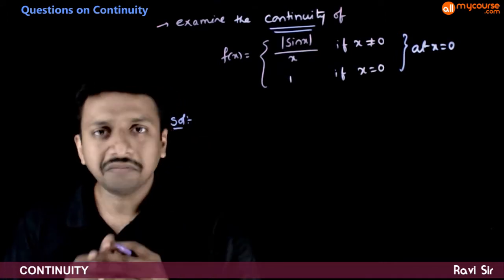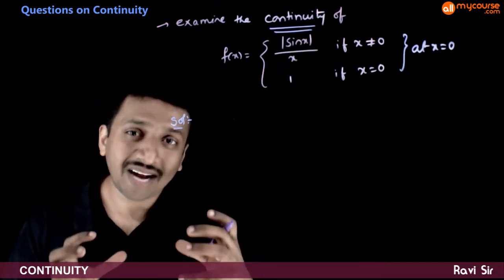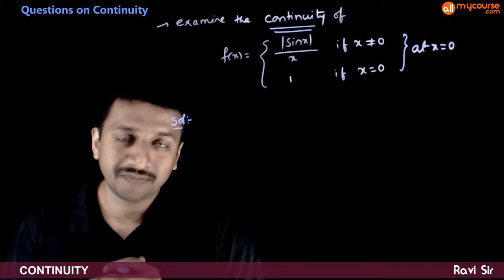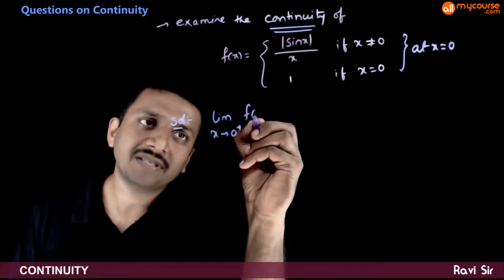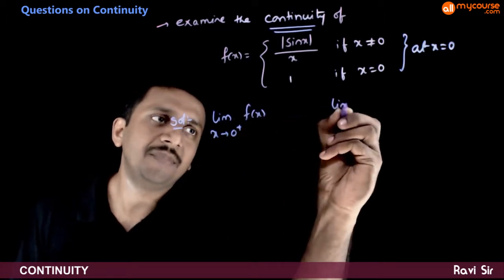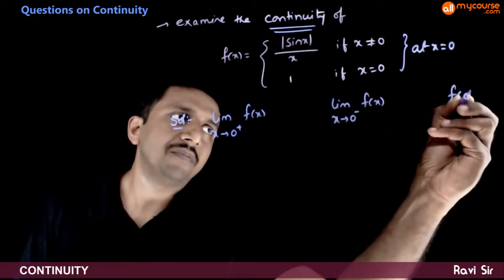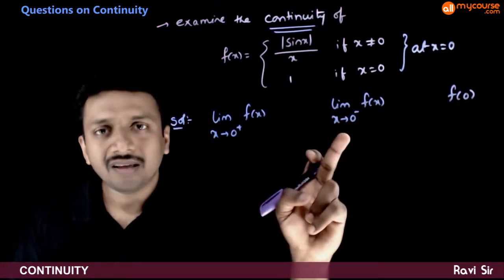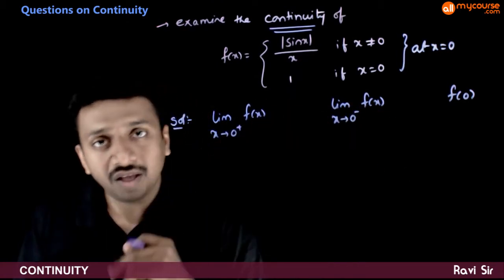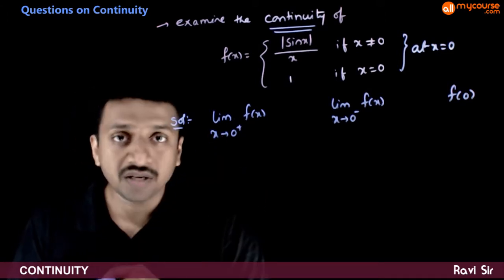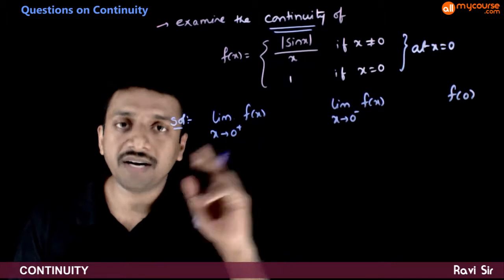How do you check the continuity? You have a formula. You need to check whether the condition for continuity holds good or not. So, limit x tends to 0 plus f(x), limit x tends to 0 minus f(x), and f(0) — these are the three quantities which you need to find. If these three turn out to be equal, then the function is continuous at x = 0, otherwise not.